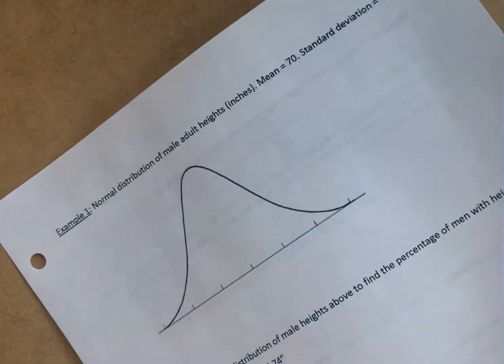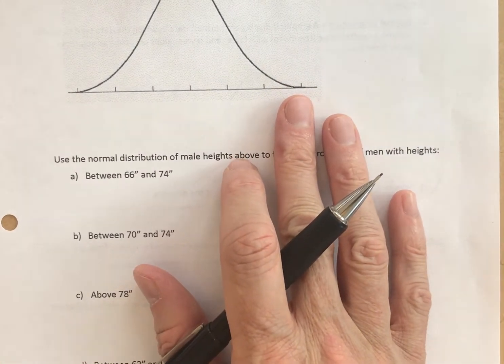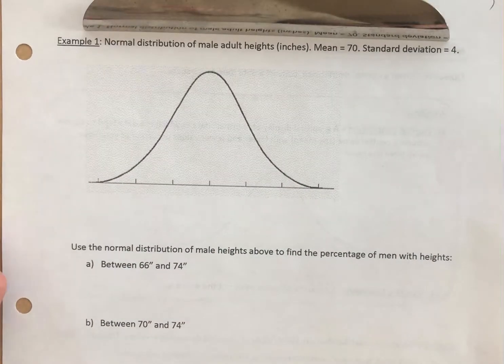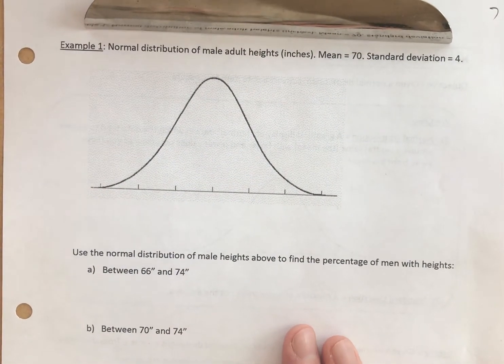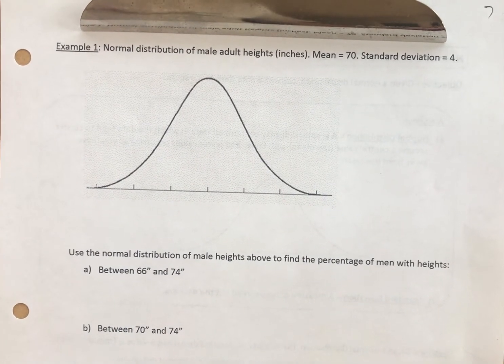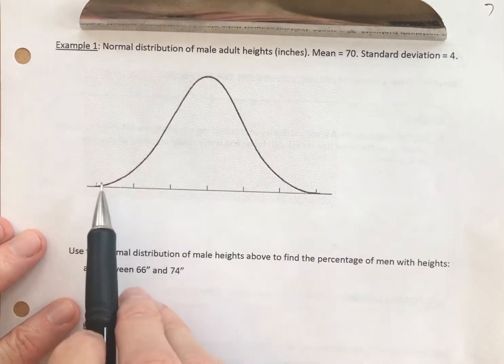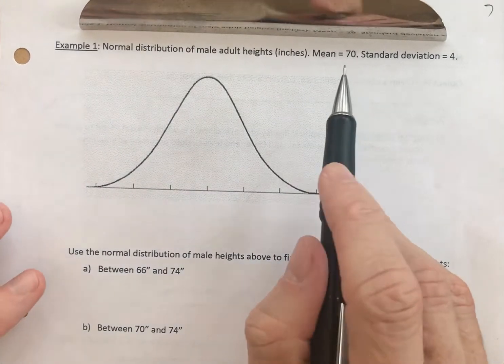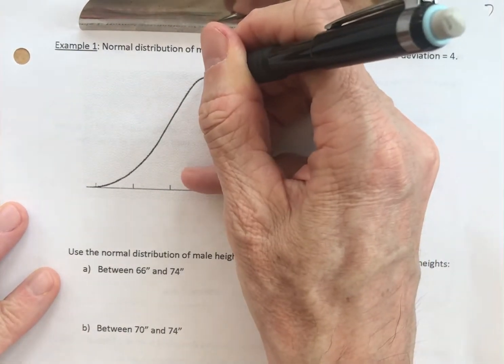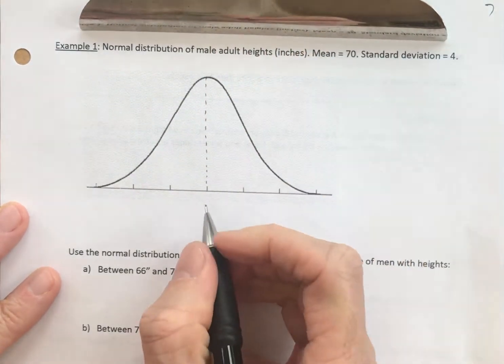Let's do some problem solving with this. We're going to go back to male heights. Again, heights are very normal. We're all clustered around an average height. Example one: we have a normal distribution of adult male heights, and the mean is 70, and the standard deviation is 4. Let's go ahead and label our diagram. Always helps to see it.